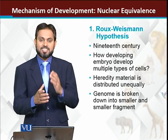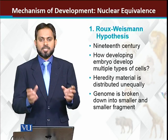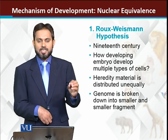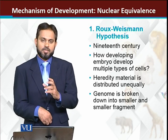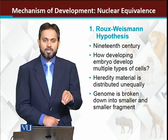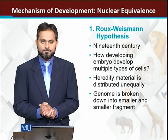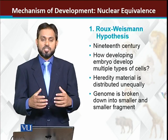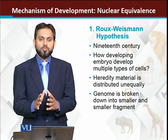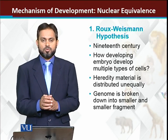This means that as the cell divides, the genome converts into fragments — one piece of the genome goes to one cell, another piece goes to another cell. So whichever piece of the genome a cell receives, that cell will develop into the corresponding organ in the future. This was the initial hypothesis — that the genome splits, and its fragments are distributed to different cells.